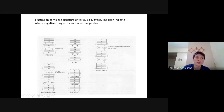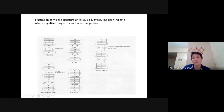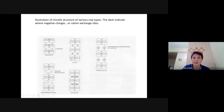Kaolinite is very strongly tied together because of the large amount of hydrogen bonds. With potassium, it will only neutralize the negative charge. If there is potassium, it manages to neutralize the charge, and therefore the layers can come close together — and when they come close together, they will not swell.